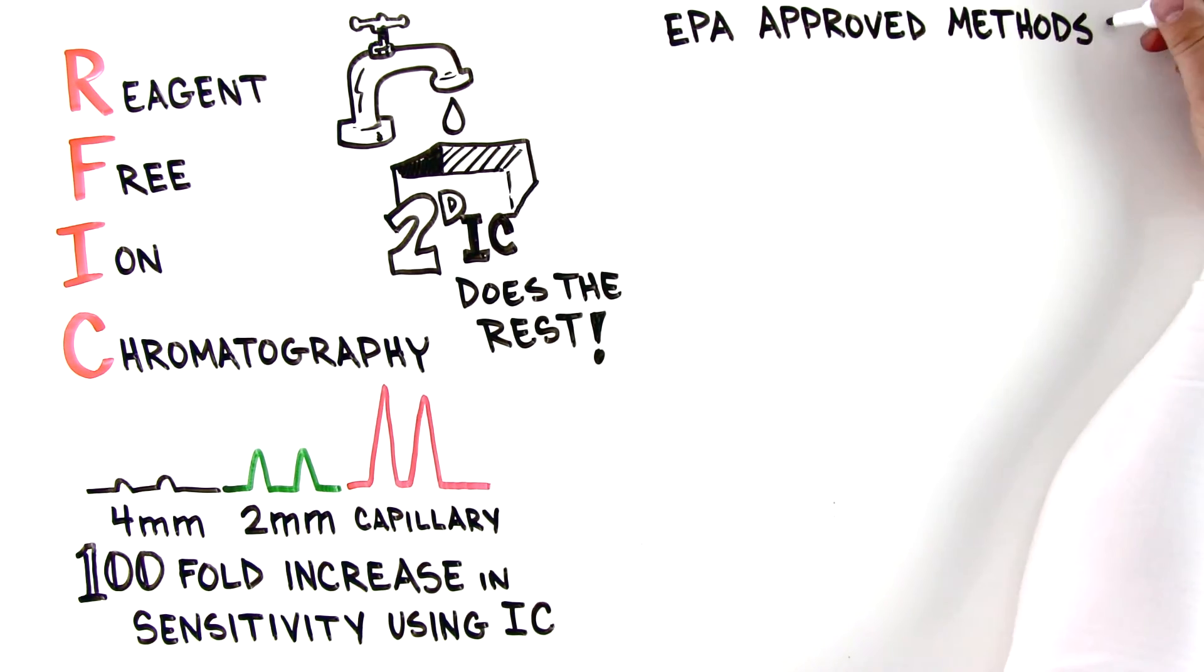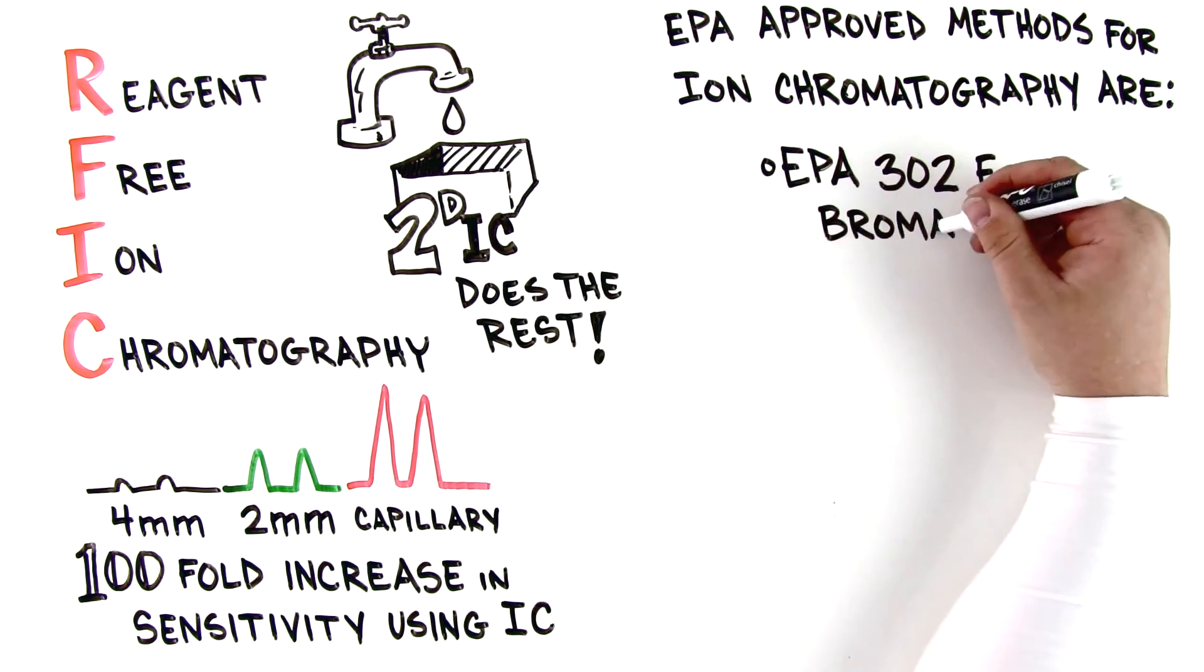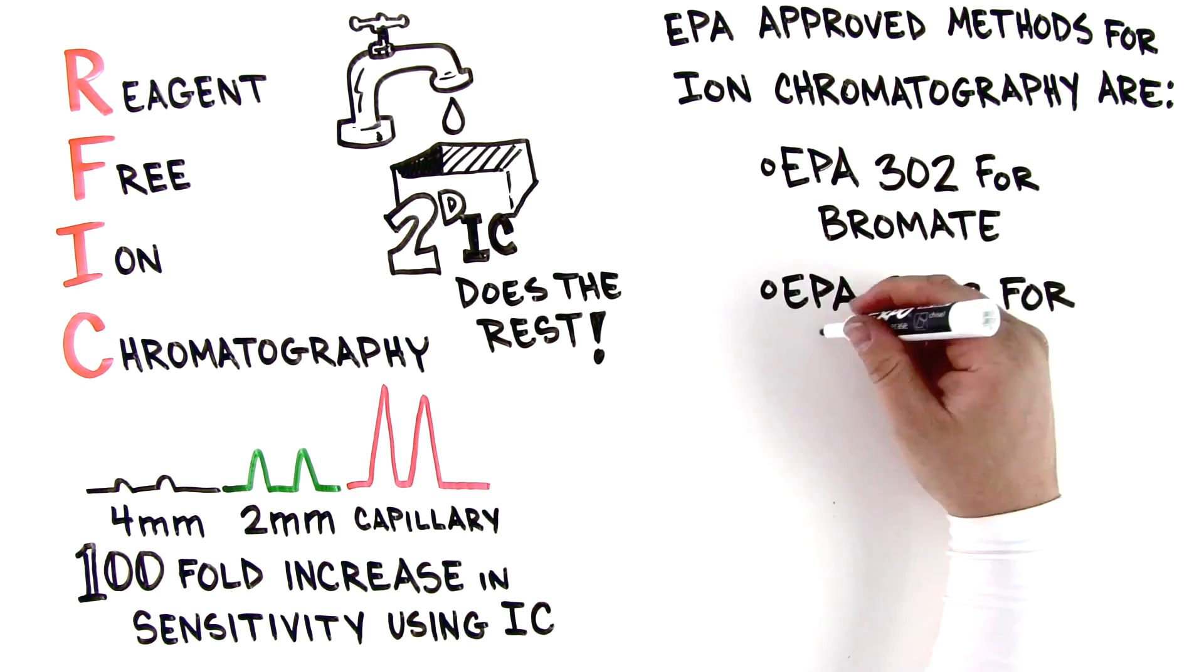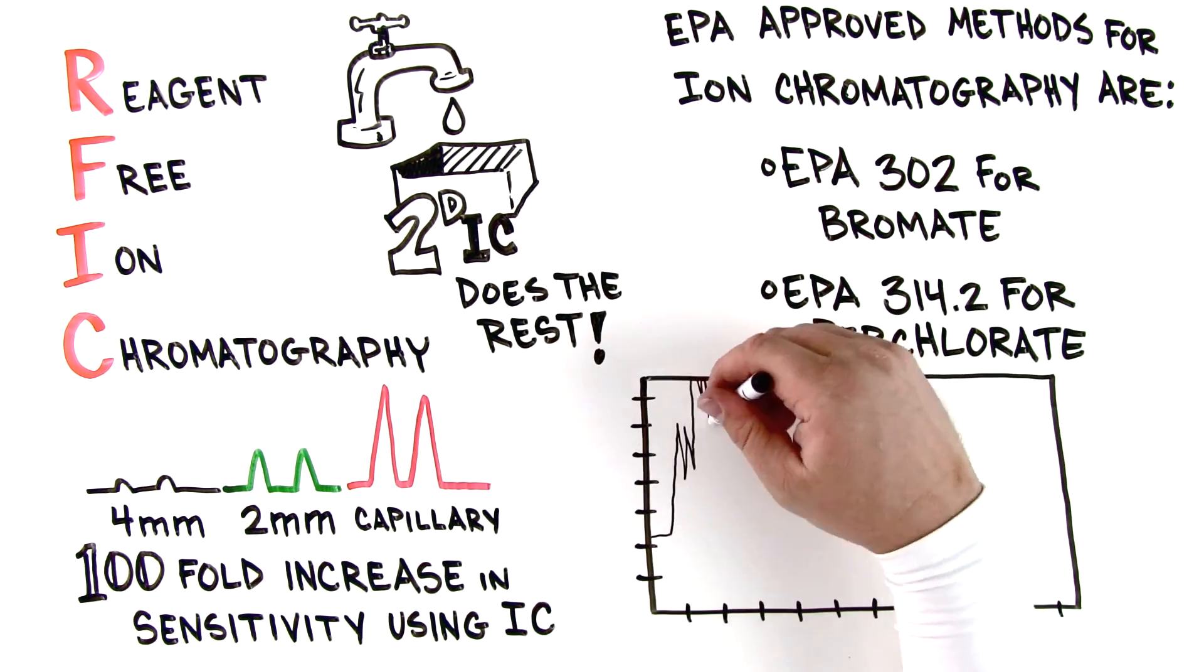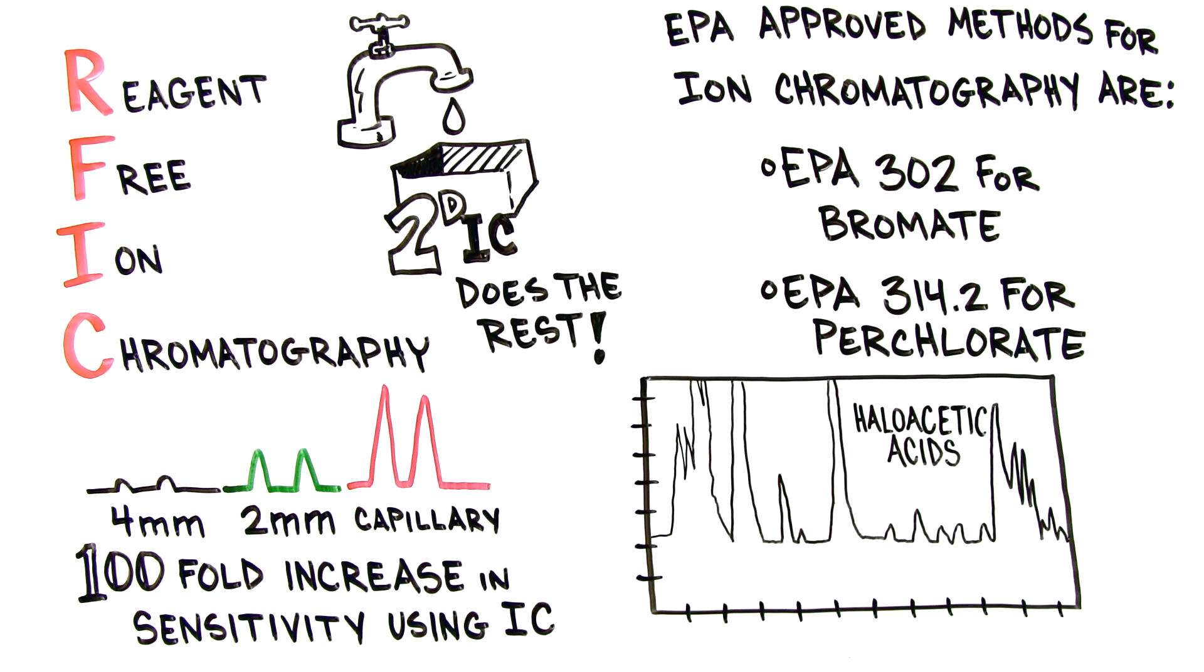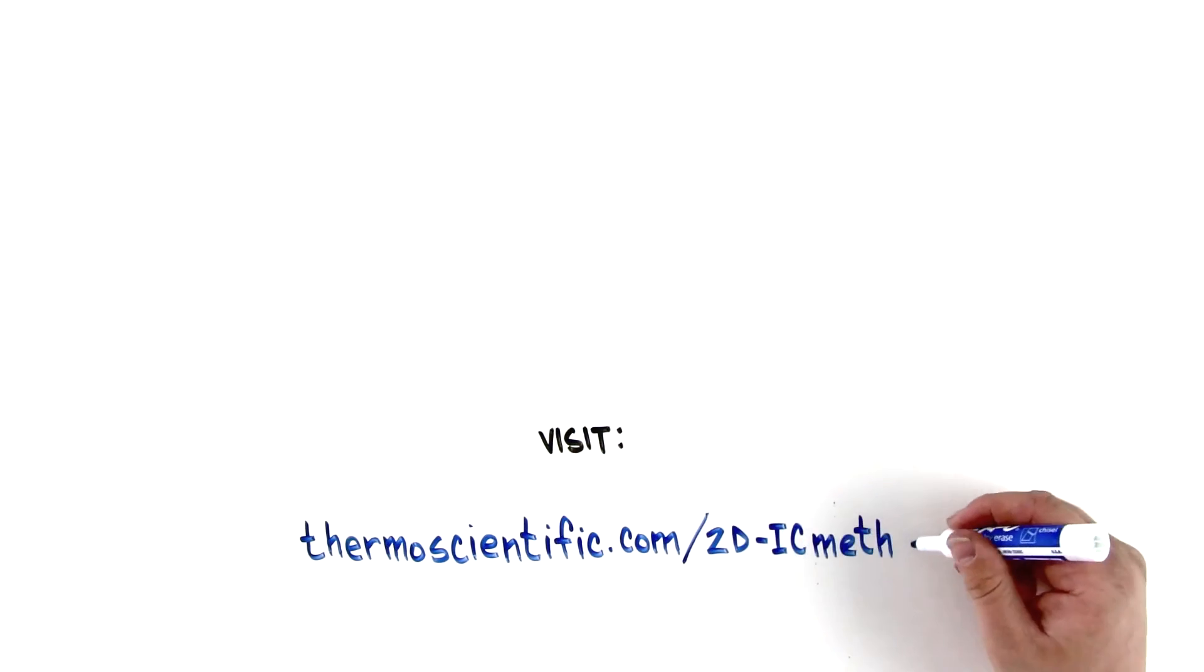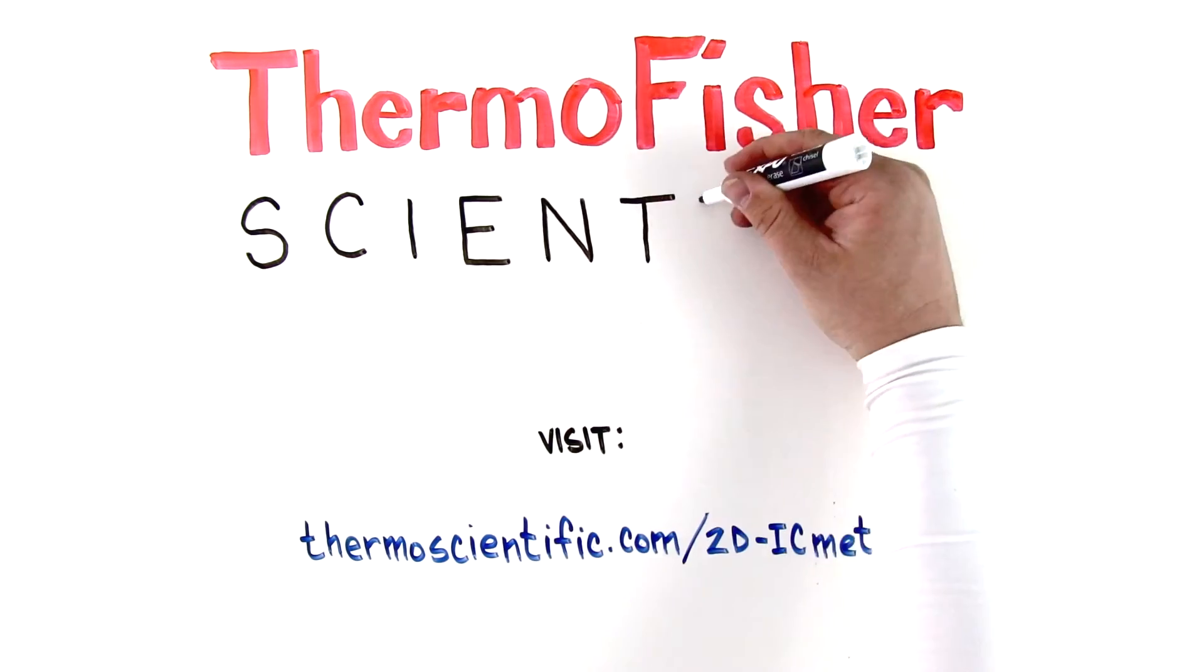EPA approved methods for 2D ion chromatography are EPA 302 for bromate and EPA 314.2 for perchlorate. 2D ion chromatography can also be used for the separation of haloacetic acids. Visit thermoscientific.com slash 2D-IC methods for more on two-dimensional ion chromatography.